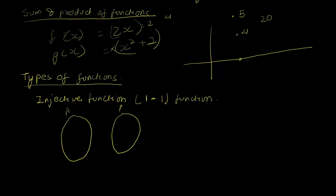In a Venn diagram for an injective function, each input has an output, but the same output cannot be the result of two different inputs. There could be elements left over in set B — that would still be an injective function. One-to-one means each input has one output and that output is not reachable from any other input. It's like distributing chocolates to children where there are more children than chocolates — you ensure no child gets two chocolates, and some will be left out.